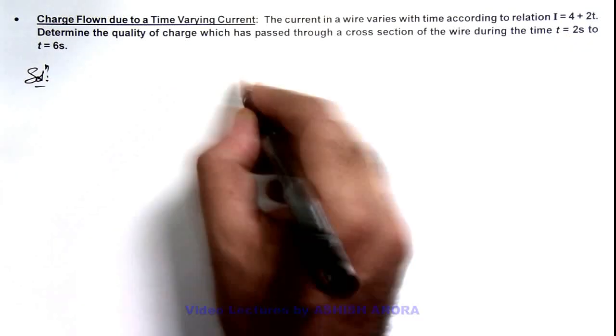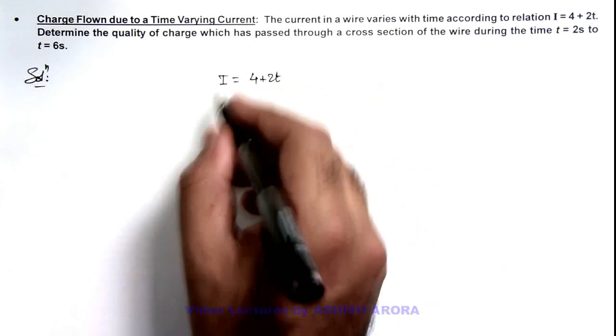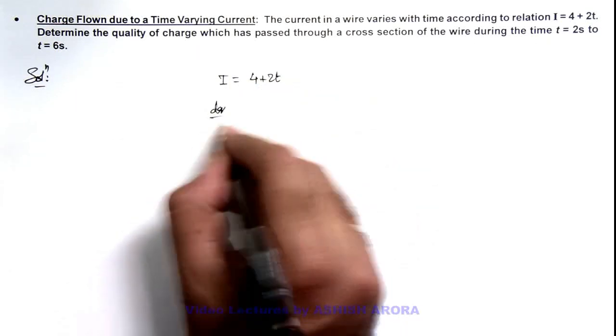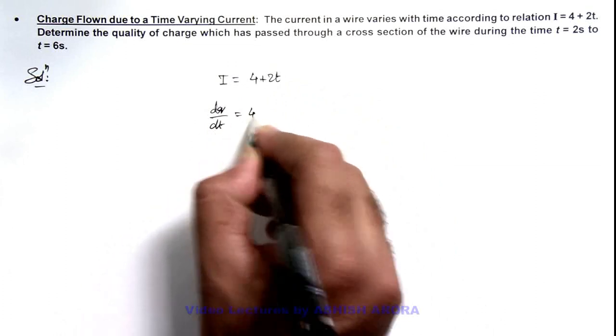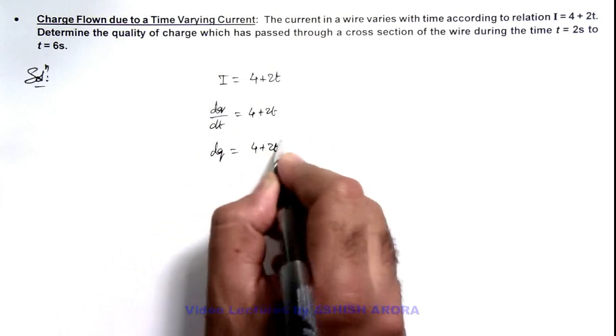So here we can write, as we are given that the value of current is 4 + 2t, we can write i as dq/dt = 4 + 2t. Further we can write dq = (4 + 2t)dt.